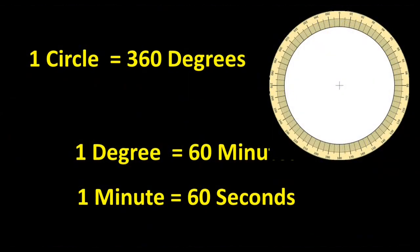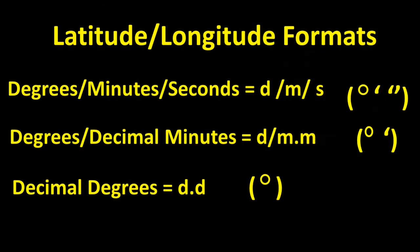Let's review. Lines of latitude are divided into degrees, as with a standard circle. Each degree is subdivided into 60 minutes. Each minute is subdivided into 60 seconds. There are three formats in which longitude and latitude are given: degrees-minutes-seconds, degrees decimal minutes, and decimal degrees. We previously used decimal degrees to locate Pendleton, Oregon.